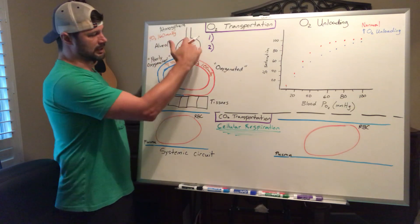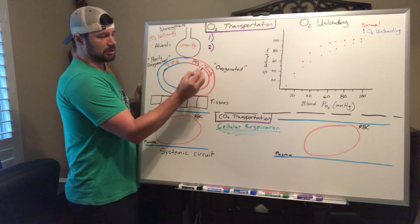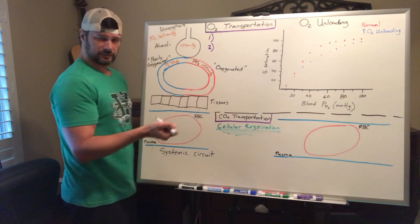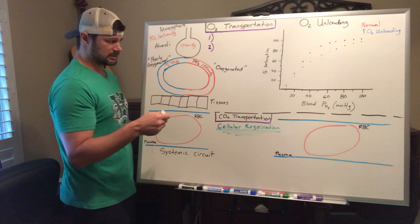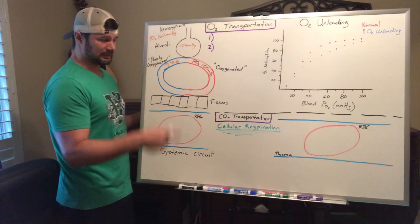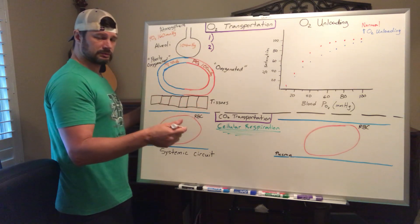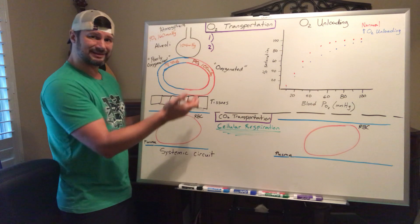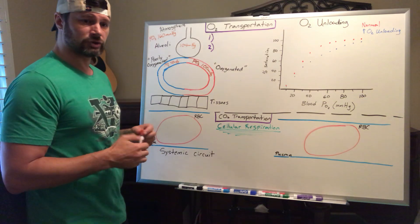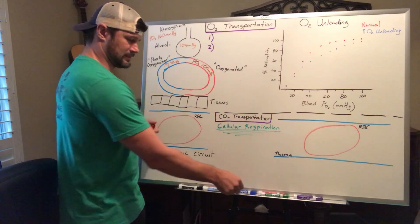That partial pressure of oxygen in our bloodstream heading out to the tissues is about 100 mmHg, which is fantastic because this is the oxygen our tissues need to run cellular respiration. Cellular respiration involves gas exchange — oxygen going into the cells and CO2 going out — but we can also think of it in terms of aerobic oxidation and metabolism, because the oxygen is being used to make ATP.